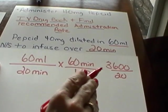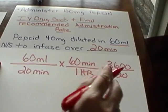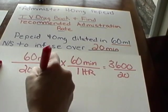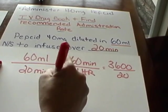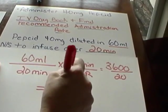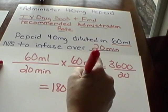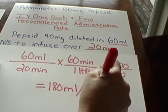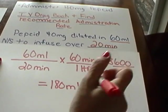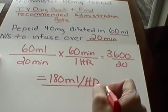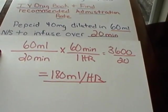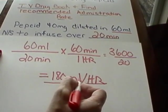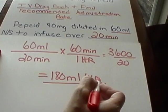3600 divided by 20 equals 180 milliliters per hour. That is the rate at which we will infuse our Pepcid — 180 milliliters per hour.